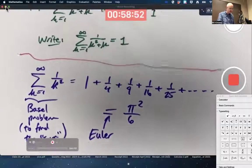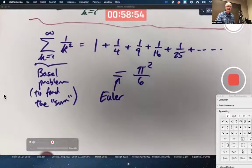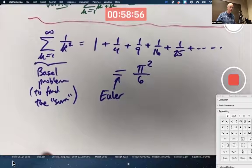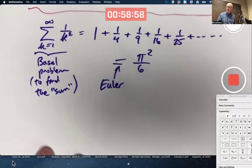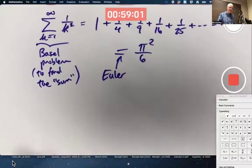So it took a genius Euler to figure out this is pi squared over 6. We can't figure that out at the moment. Could we figure out it converges, though? Yes, we can.